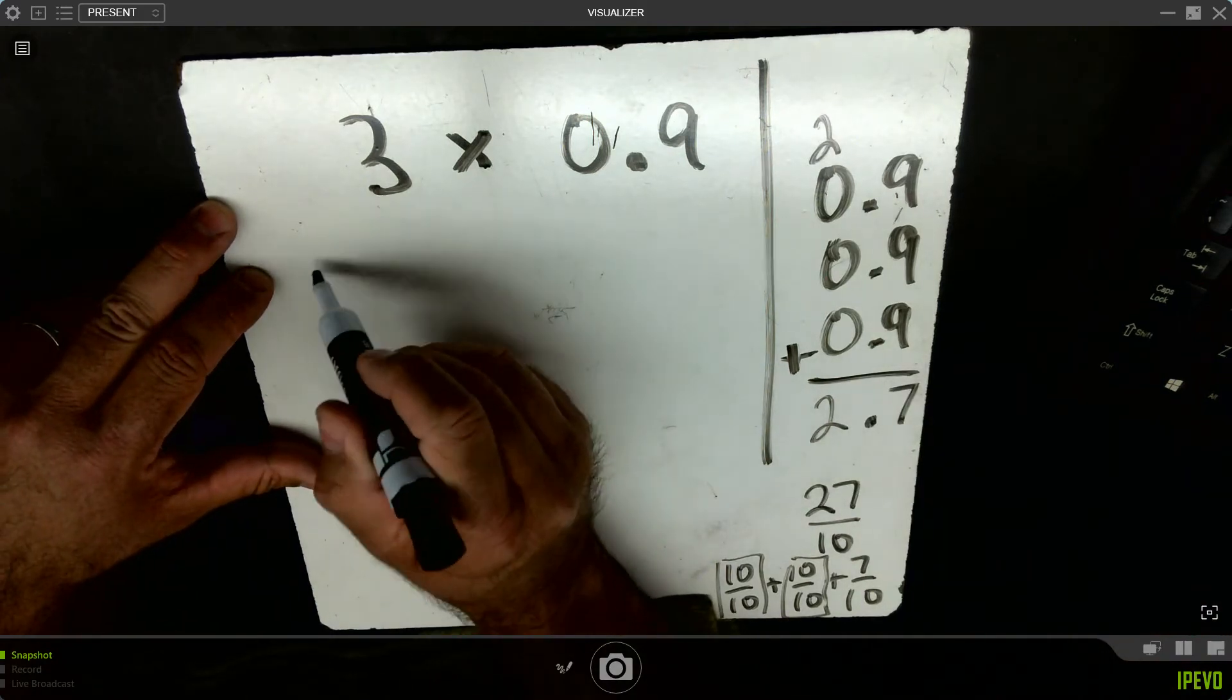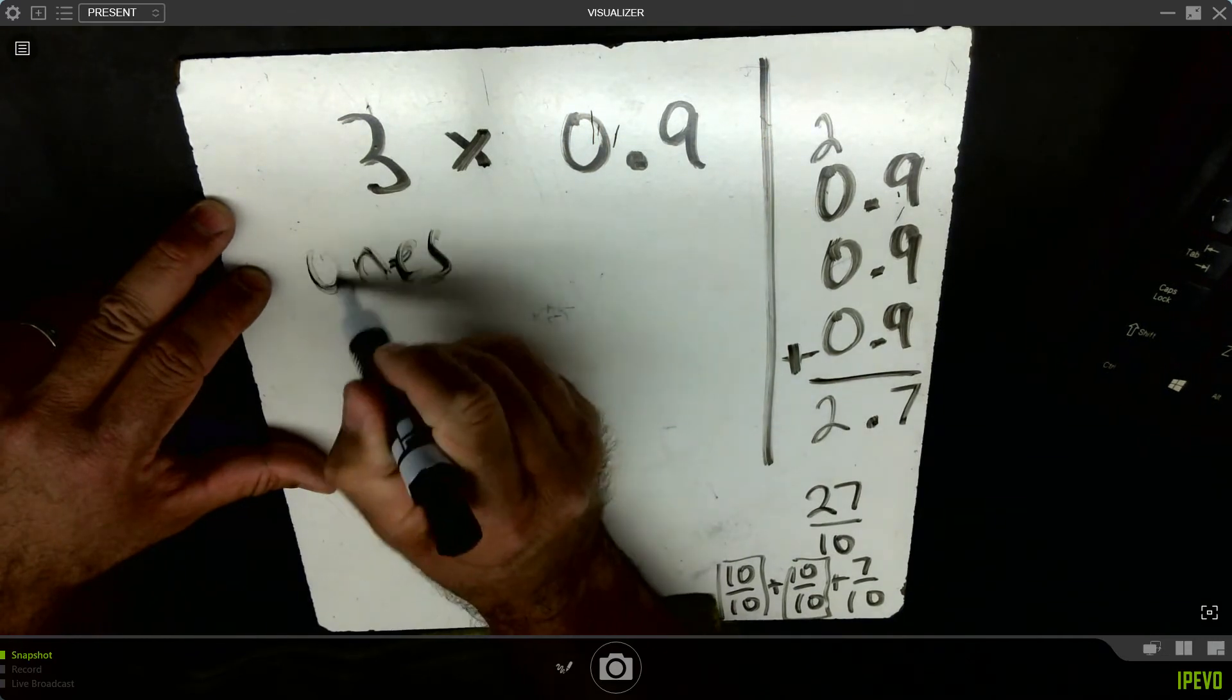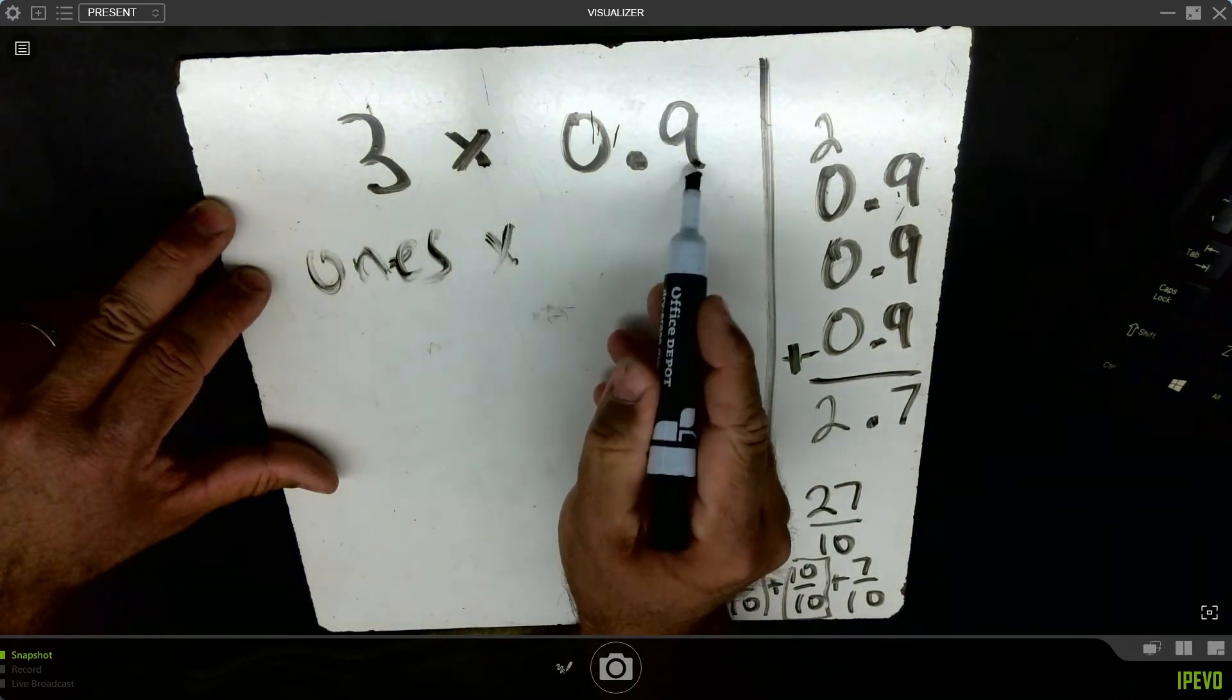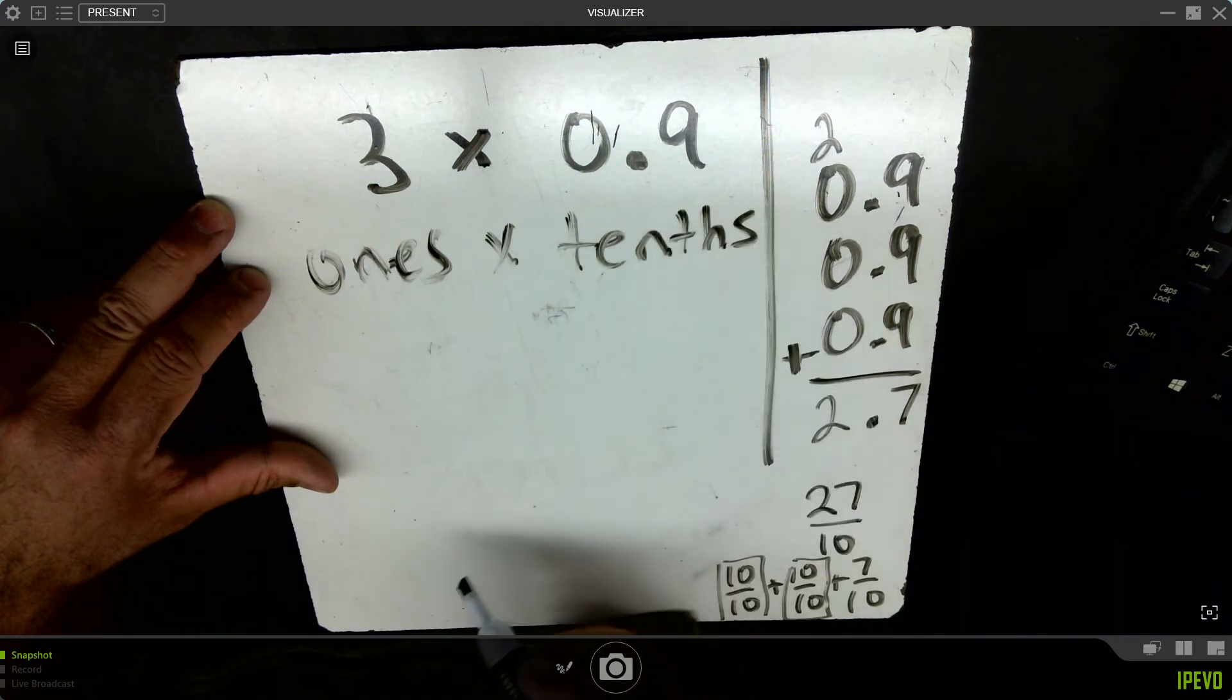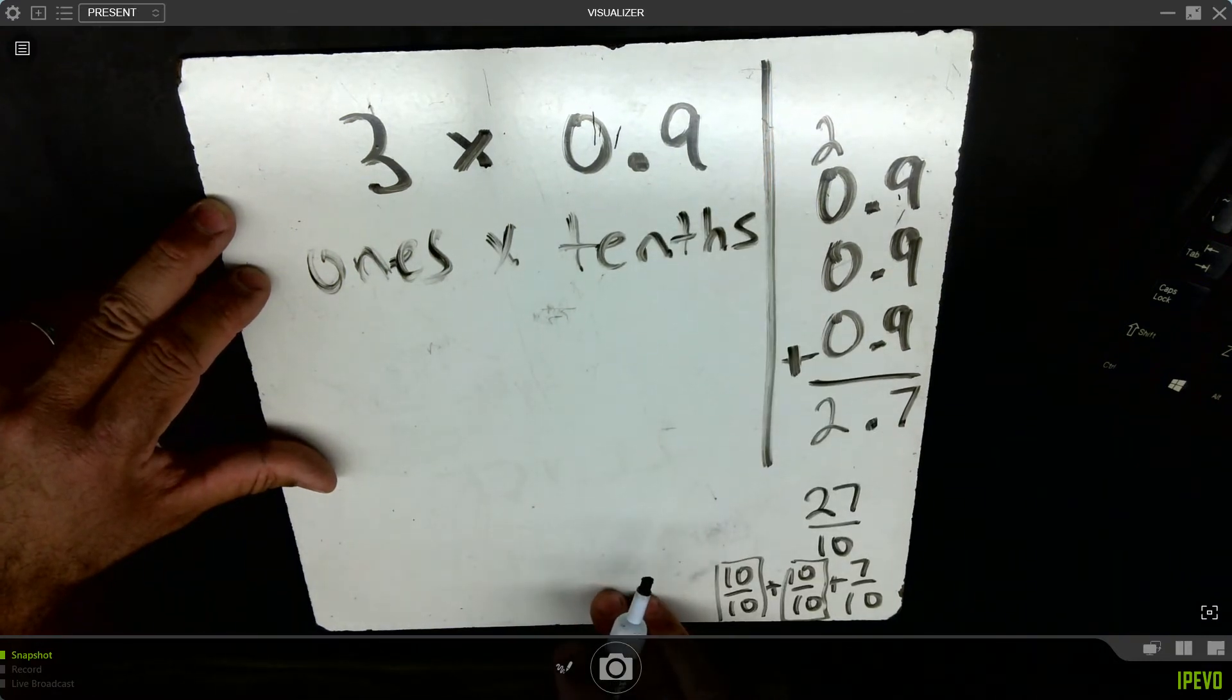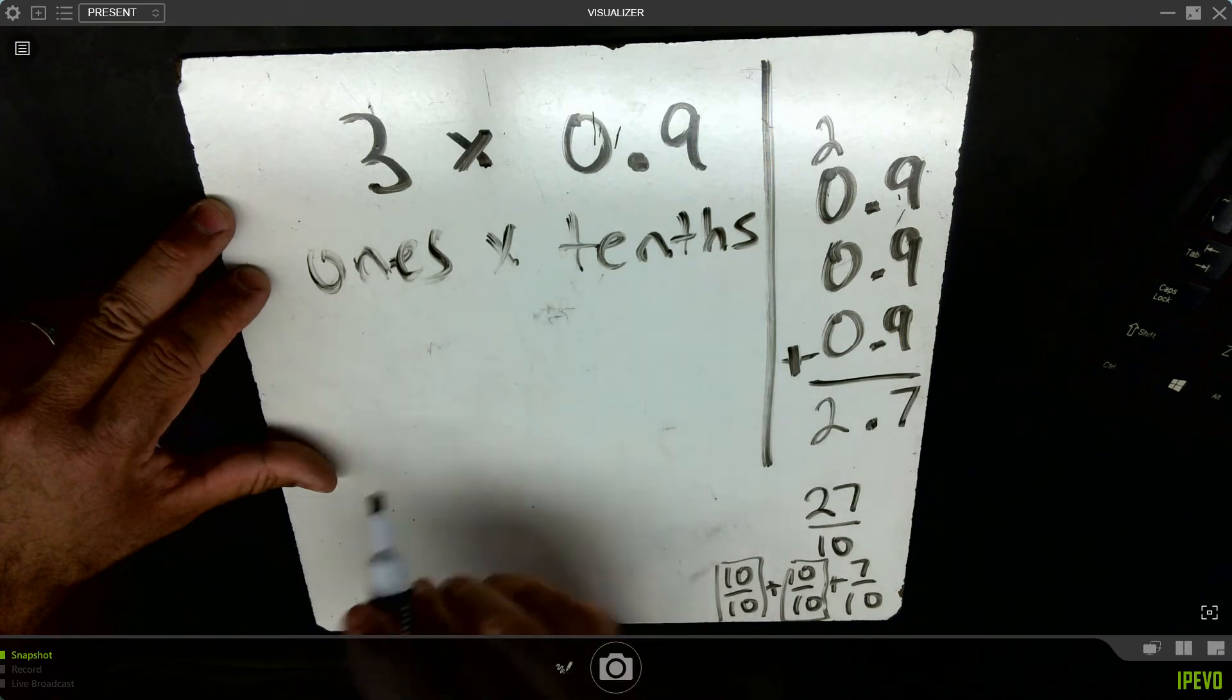I have three groups of 1's. When I look at that, 1's times 10's, I know that my answer is going to have 10's for its place value. 1's times 10's is 10's.